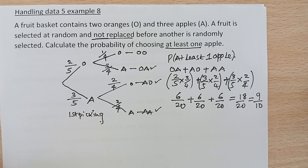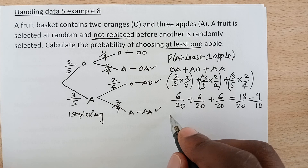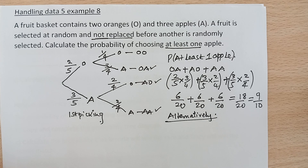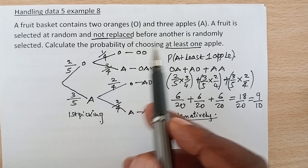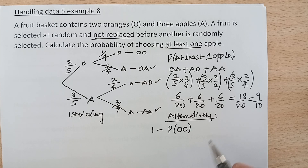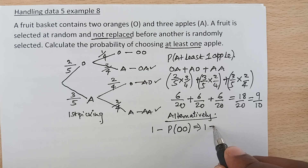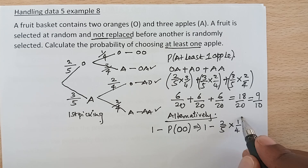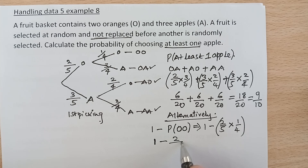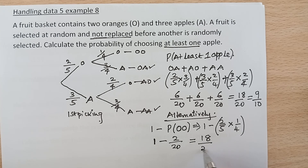That is the probability of picking at least one apple. Alternatively, the probability of picking at least one apple — the only thing we don't want is both oranges. So we can have 1 minus the probability of picking an orange and another orange. That means 1 minus 2 out of 5 times 1 out of 4, which gives 1 minus 2 out of 20, which is basically 18 out of 20, and in simplified fraction this is 9 out of 10.